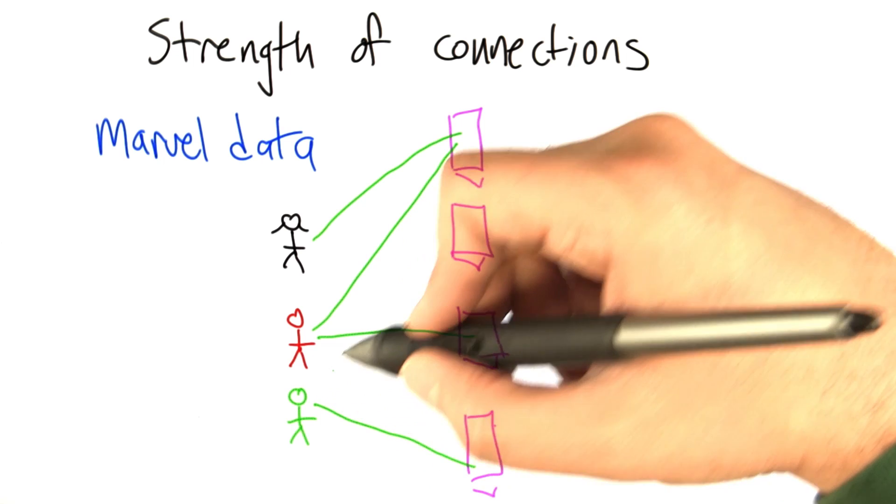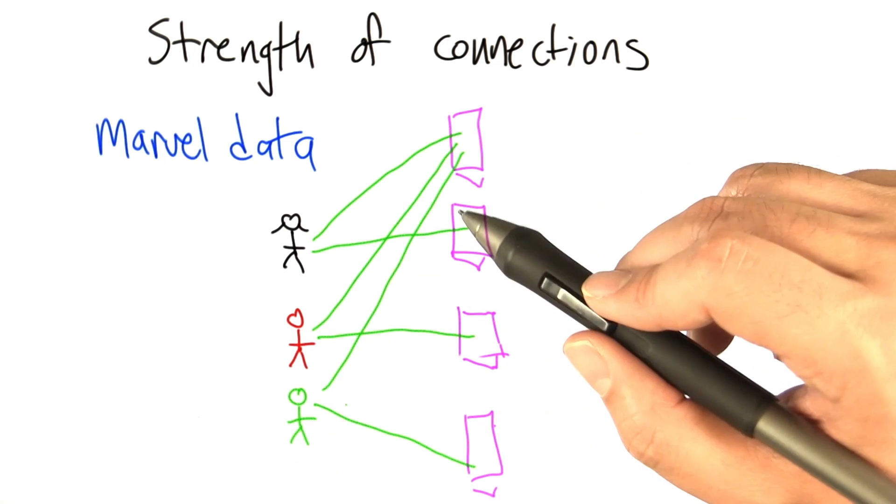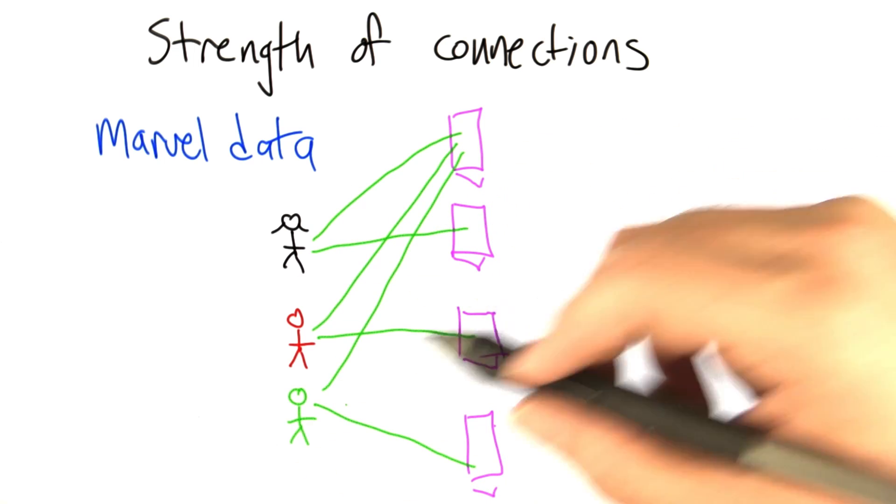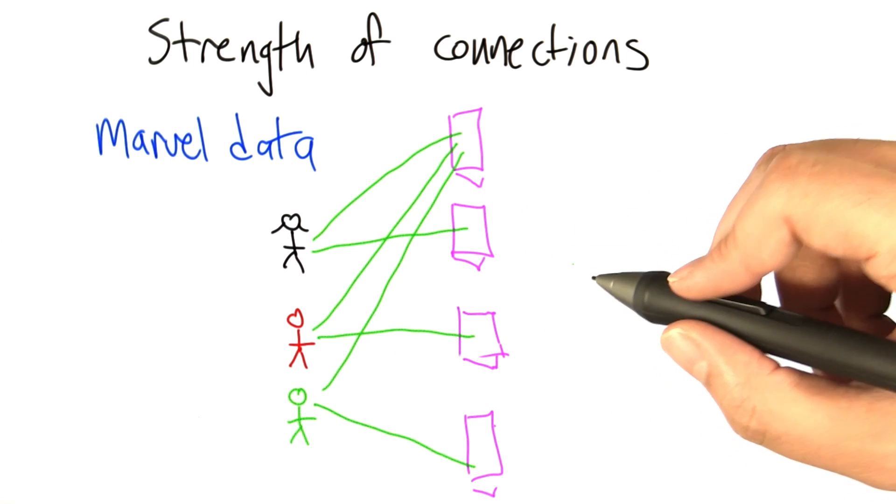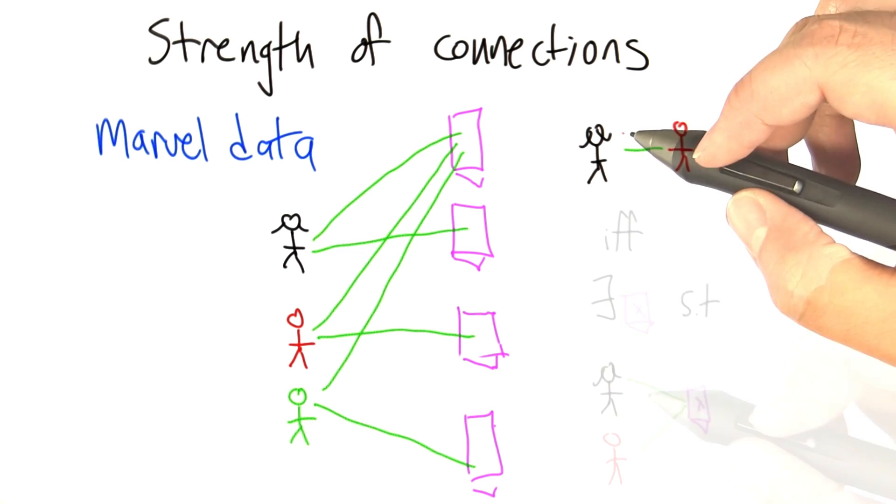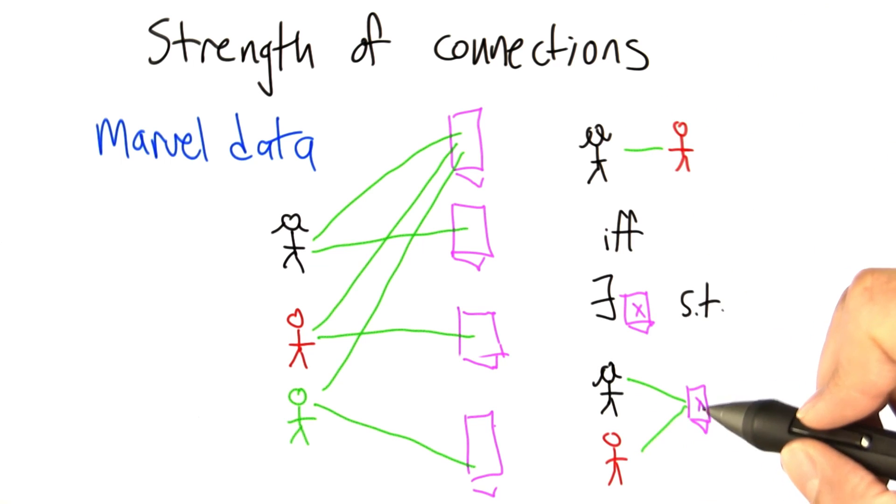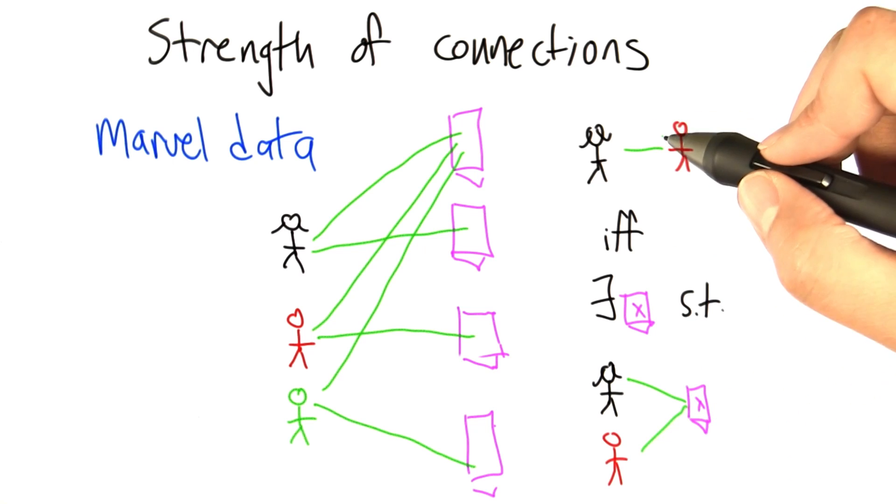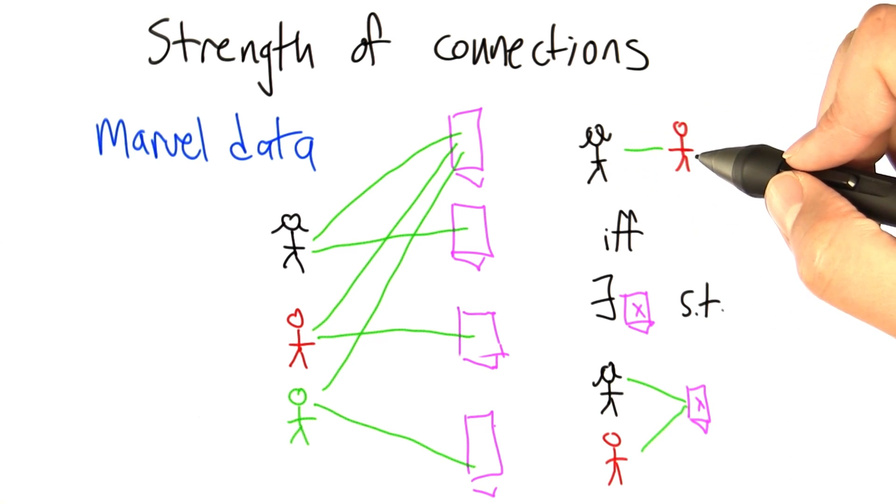Now, we're often interested in connections between the individual characters. So up till now, we said that there's an edge linking, say, Black Widow and Spider-Man, if and only if there exists a comic book such that Black Widow and Spider-Man both appear in that comic book in the original data set.